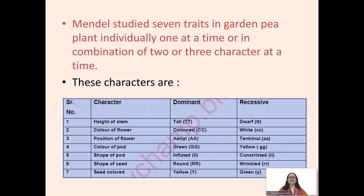These seven characters are: height of stem (tall and dwarf), color of flower (colored and white), position of flower (axial or terminal), color of pod (green or yellow), shape of pod (inflated or constricted), shape of seed (round or wrinkled), and seed color (yellow and green). These are seven pairs of contrasting characters studied by Mendel.